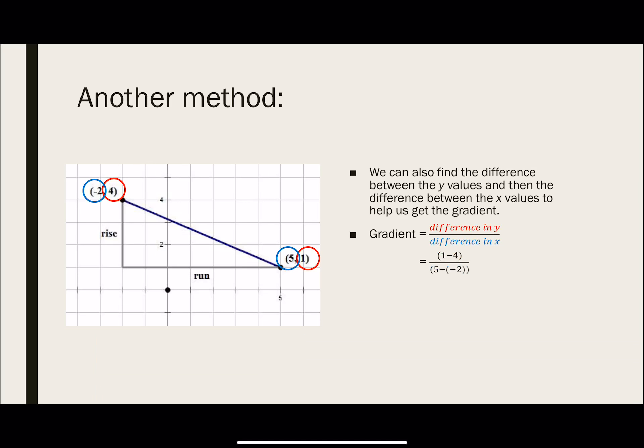I will also start with the coordinate on the right, and this time I use the x values. So the x value is 5. I take the difference, so I minus. But the other value, be very careful, is negative 2. As you know, 1 minus 4 is negative 3. 5 minus negative 2, because of the double negatives, it becomes a positive, right? So you get negative 3 over 7. So what we can do is that we can also just use by pure difference. Difference in y and difference in x. But try to keep it such that you always start with the coordinate on the right, and you find the difference with the coordinate on the left.